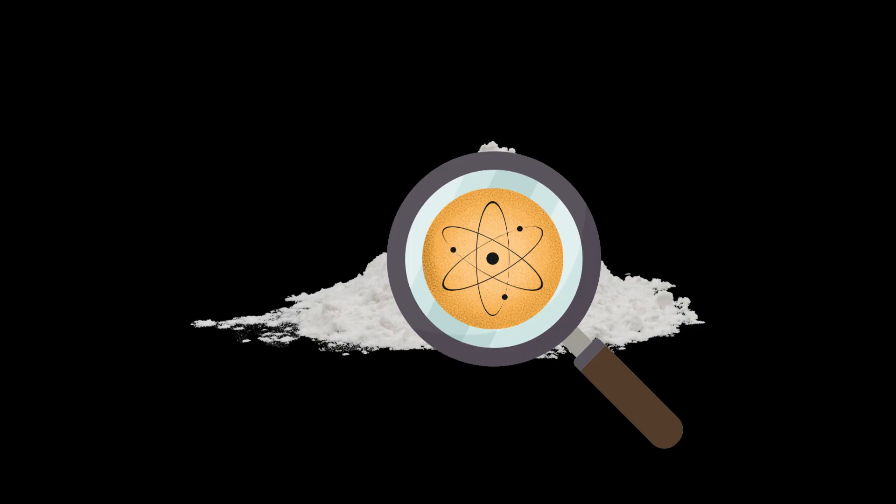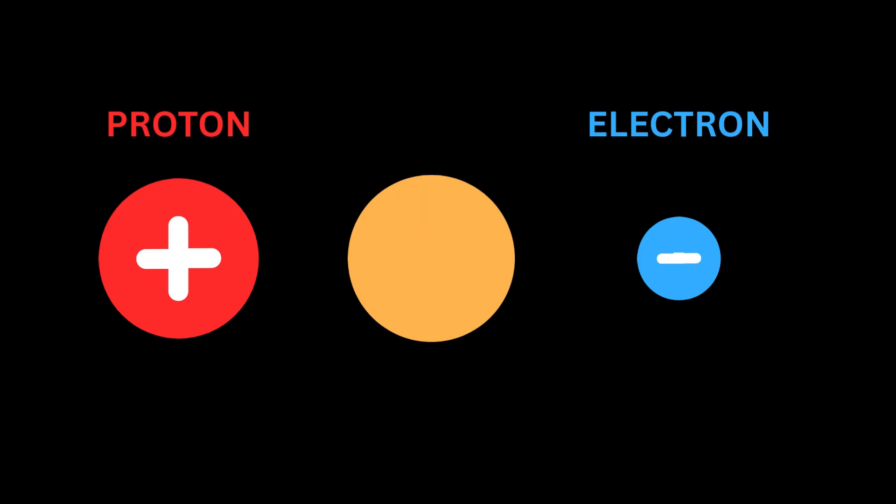An atom is the basic building block of matter, the smallest unit of an element that retains the chemical properties of that element. In general, an atom consists of three subatomic particles: protons, positively charged particles; electrons, negatively charged particles; and neutrons, neutral particles.